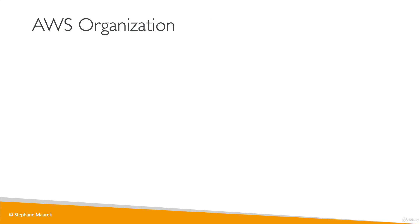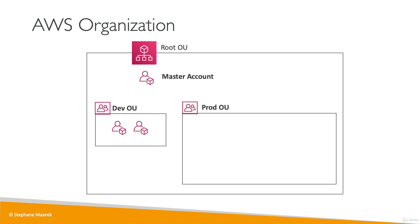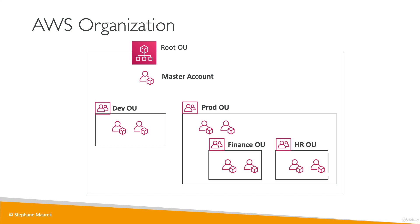An organization looks like this: the root OU contains everything, including the master account. You can then create different OUs — for example, a Dev OU with two accounts, and a Prod OU with two accounts. Within the Prod OU, you can also have nested OUs, such as a Finance OU and an HR OU with their respective accounts.